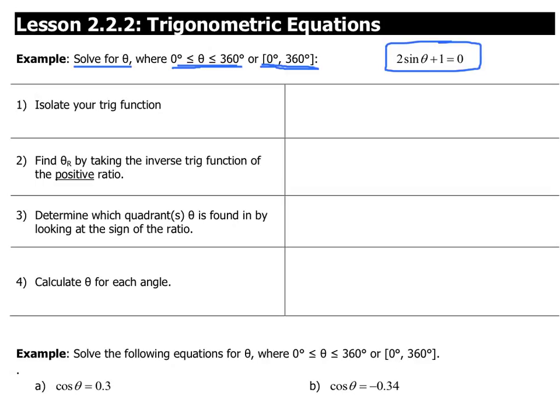Okay, step one. We're going to isolate the trig function. So, subtracting one from both sides, I get that two times the sine of theta equals negative one. And finally, dividing by two, you get sine of theta equals negative one over two. Some of you may recognize that exact value, but let's pretend we don't recognize it for now.